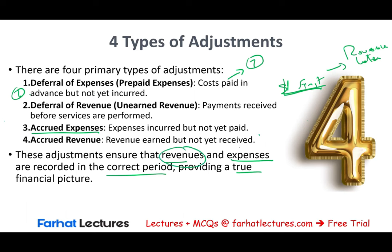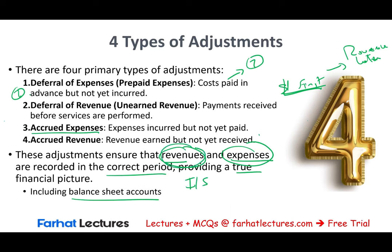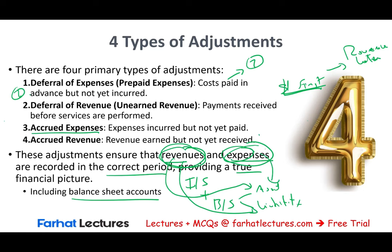These adjustments ensure revenues and expenses are recorded in the correct period and for the proper amount, providing a true financial picture. Every adjustment affects both an income statement account — revenue or expense — and a balance sheet account — an asset or liability. So each adjustment involves one income statement account and one asset or liability: revenue plus asset, revenue plus liability, expense plus asset, or expense plus liability.